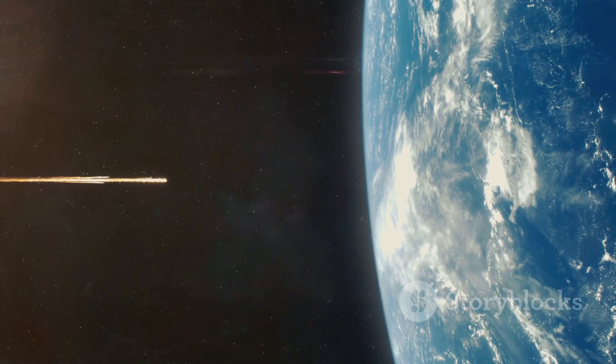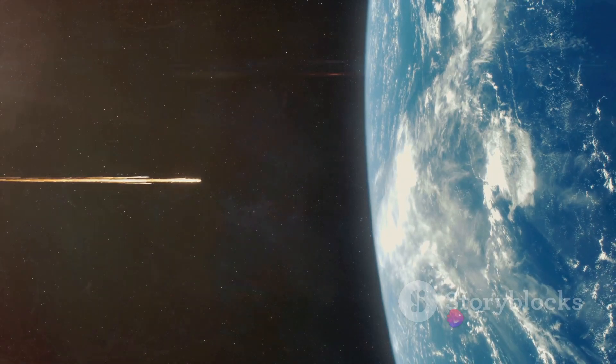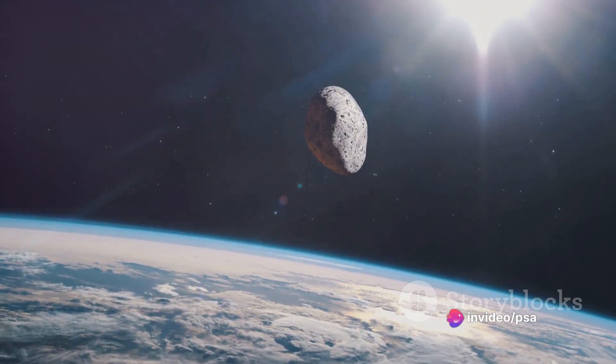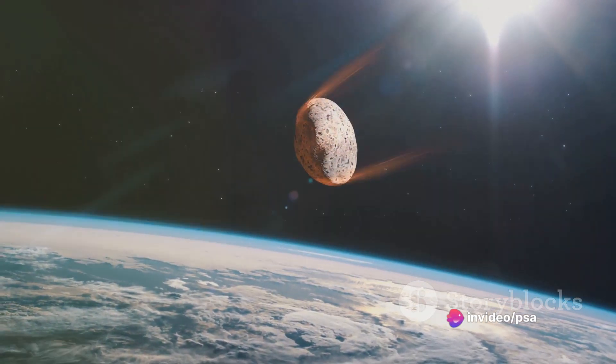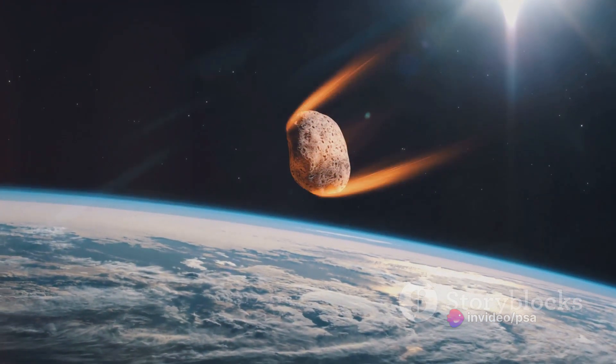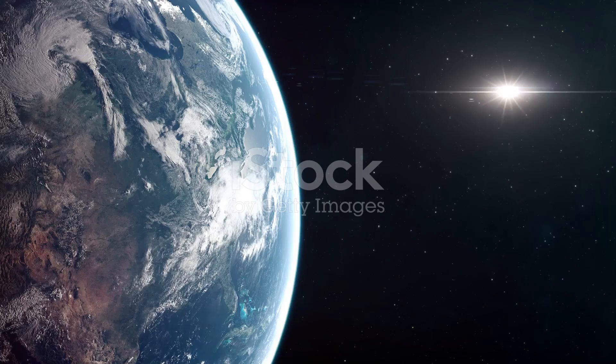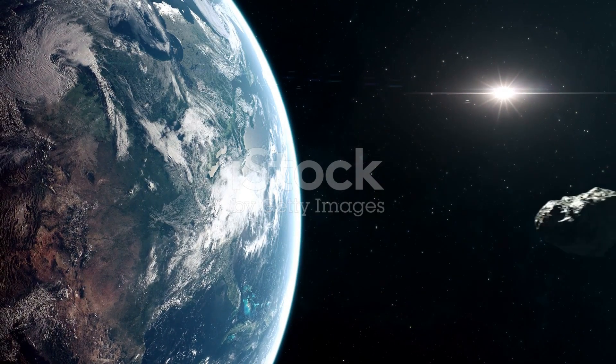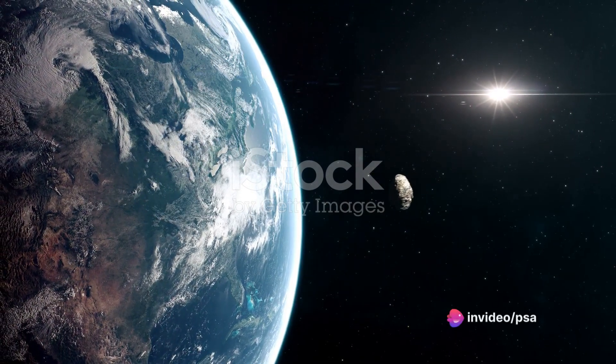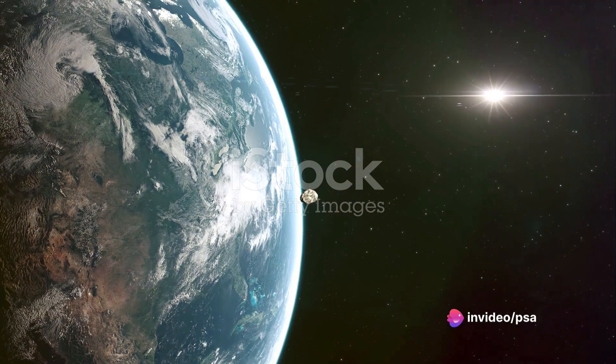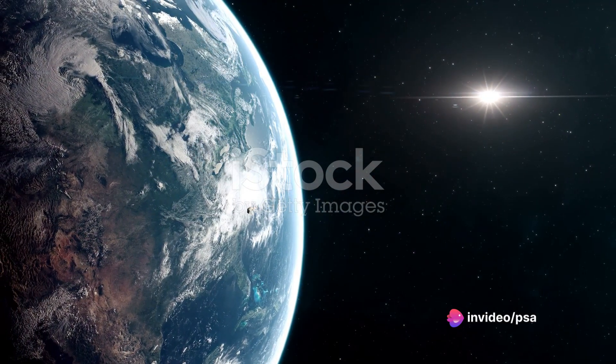This wasn't a slow burn—it was an instantaneous world-altering cataclysm. The force of the impact sent molten material rocketing into the atmosphere, where it spread far and wide, raining down upon the planet and igniting fires on a global scale. It was an apocalyptic scene right out of a science fiction movie. Yet this was no fiction. This was Earth's reality some 66 million years ago.